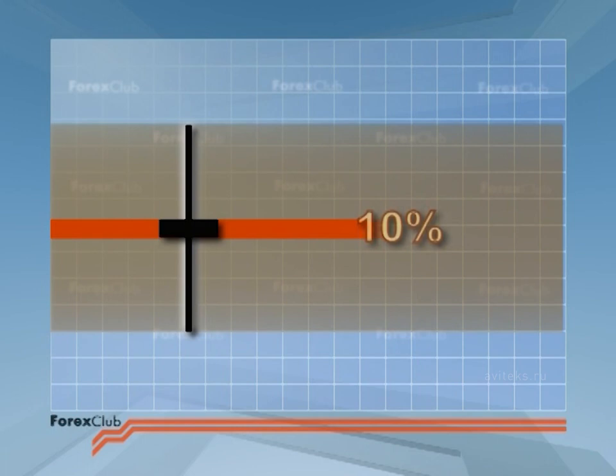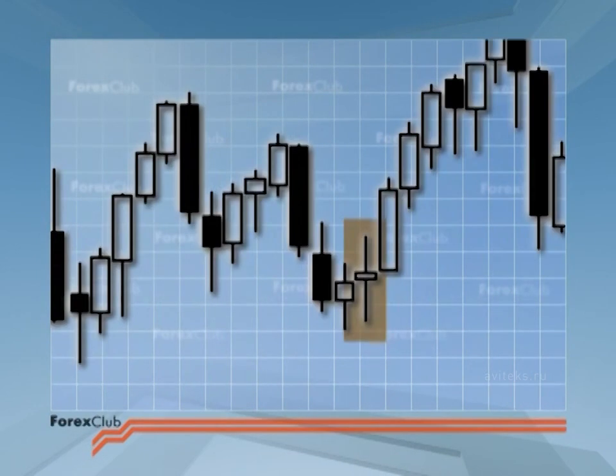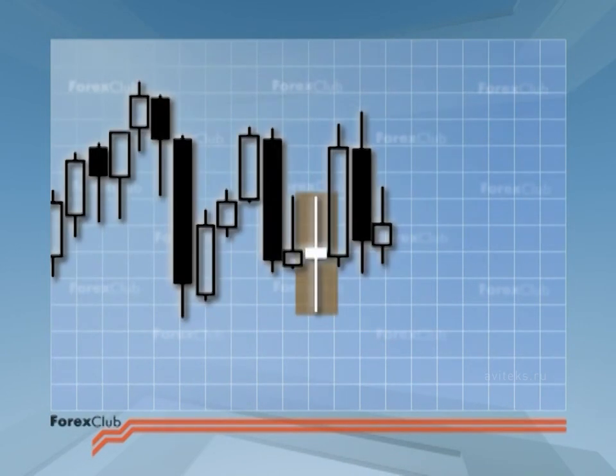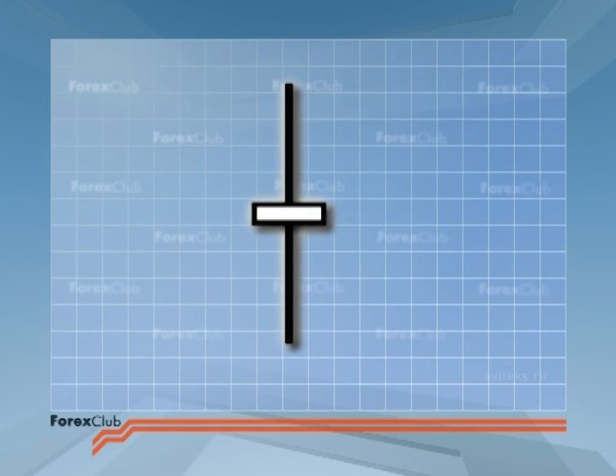I accept a candlestick with a body 10% of its height, from high to low. For example, this one, or this one, and there's another. The colour of the body is of little account with these deviant dojis.